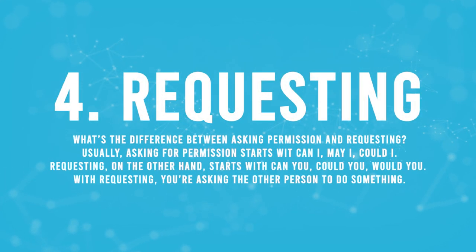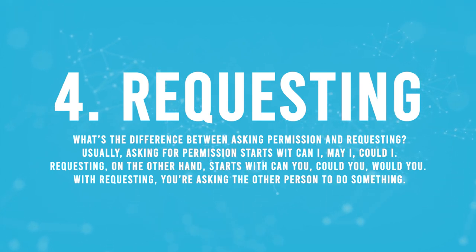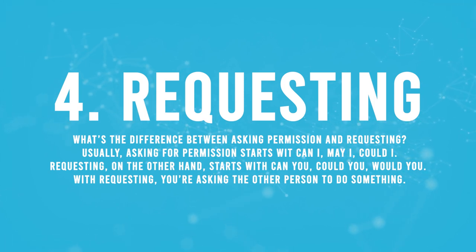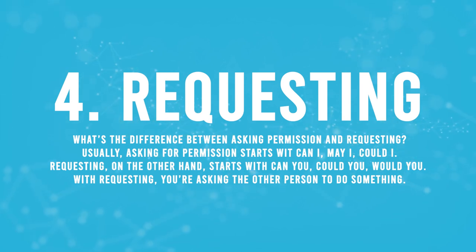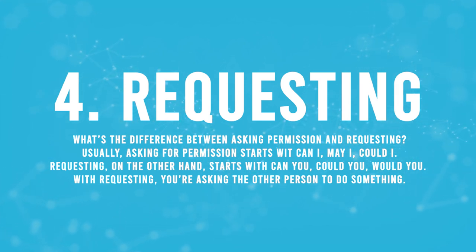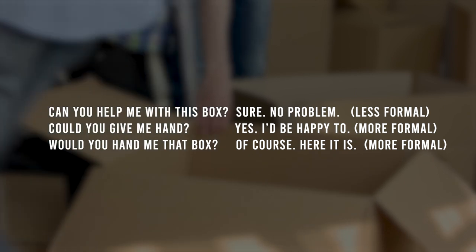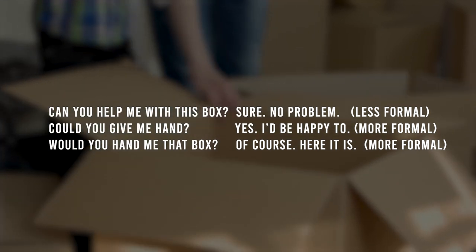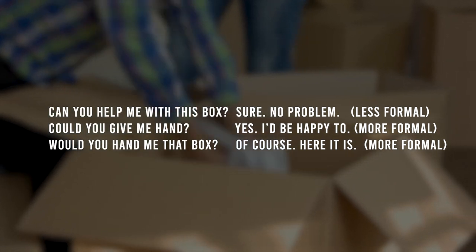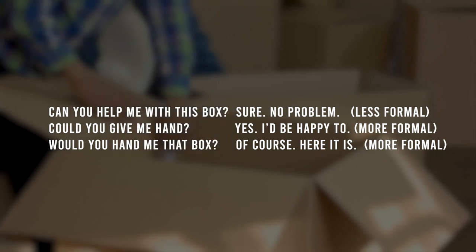Four: requesting. What's the difference between asking permission and requesting? Usually, asking for permission starts with can I, may I, or could I. Requesting, on the other hand, starts with can you, could you, or would you. With requesting, you are asking the other person to do something. Can you help me with this box? Sure, no problem. Less formal. Could you give me a hand? Yes, I'd be happy to. More formal.